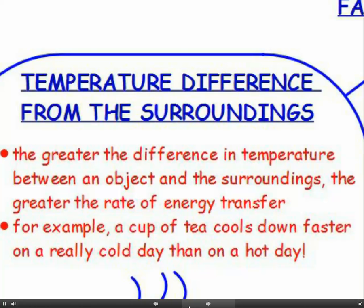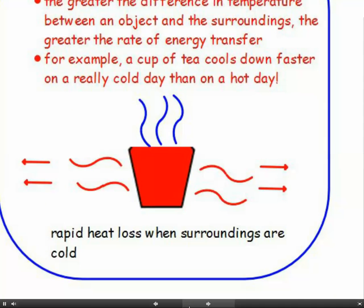The temperature difference from the surroundings will affect the rate of energy transfer. The greater the difference in temperature between an object and the surroundings, the greater the rate of energy transfer. For example, a hot cup of tea cools down a lot faster on a really cold day than on a hot day — rapid heat loss when the surroundings are cold.